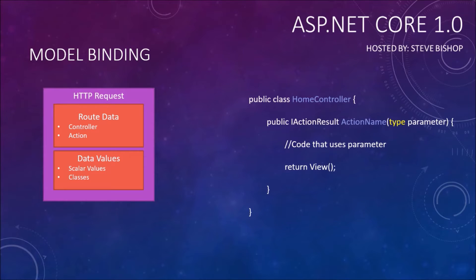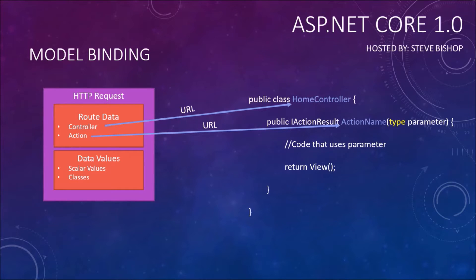For those who don't know, scalar values just means one single piece of information — it could be a string, it could be an integer. We have the ability to pass an entire class full of data to our MVC application via the HTTP request. The home controller has an action name like index, and a type parameter can be passed into that action and used within the code. The controller and action are in the URL, and even scalar values like an ID can be part of the URL — we've seen this where passing an ID in the URL puts that value into the index action's parameter.